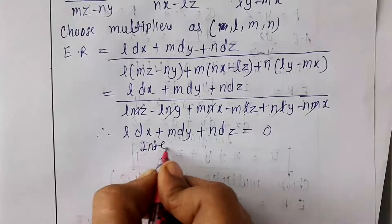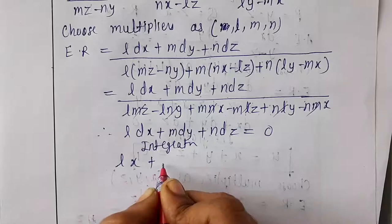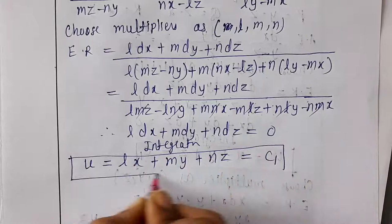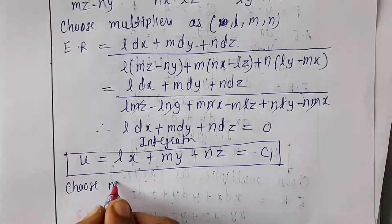Since the denominator is zero, the numerator l dx + m dy + n dz = 0. Integrating gives lx + my + nz = c₁, which is the first solution u.